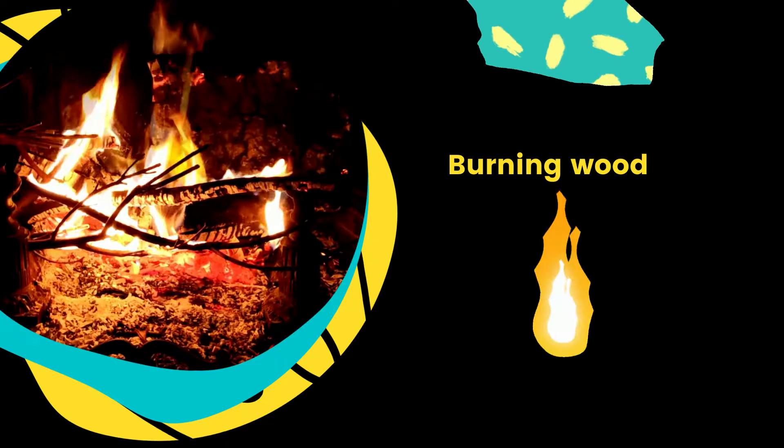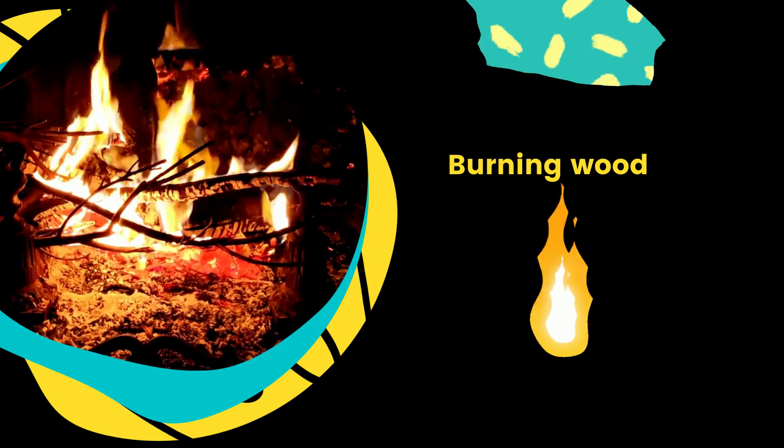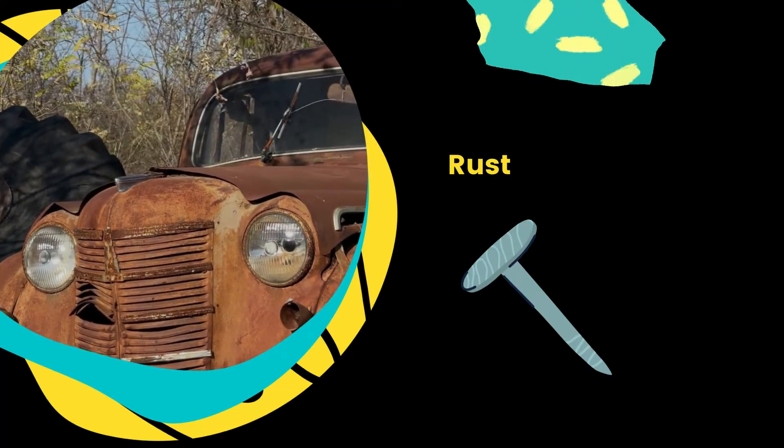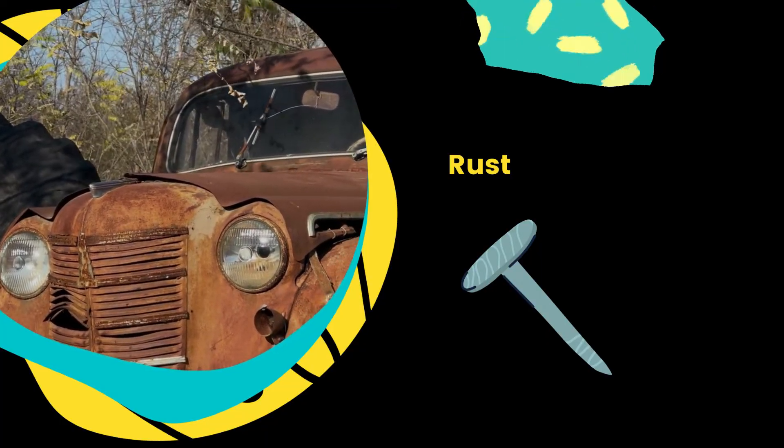The ice melts into water, the wood turns to ash, and rust slowly forms as a reddish-brown substance over the nail. So what's the difference?